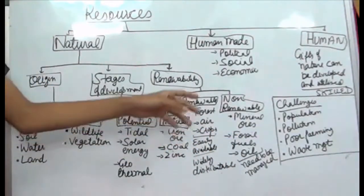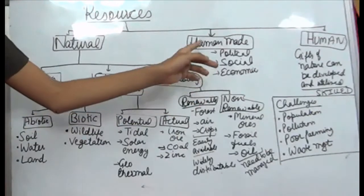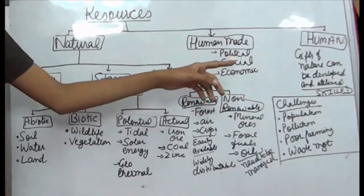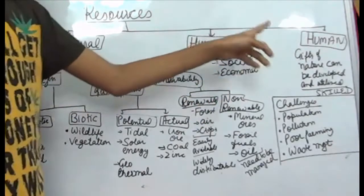Now I am going to tell you about human-made resources. These are classified into three types: political, social, and economic.